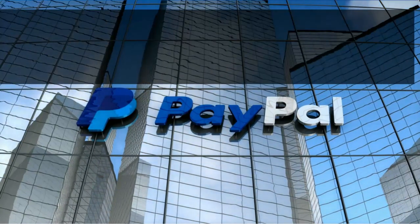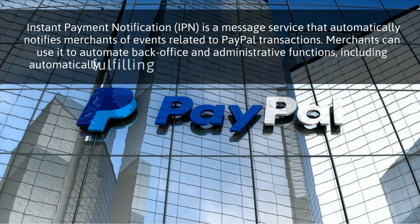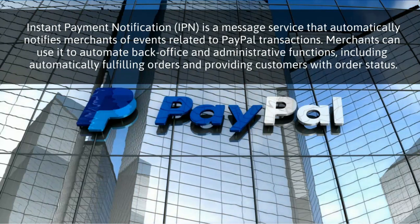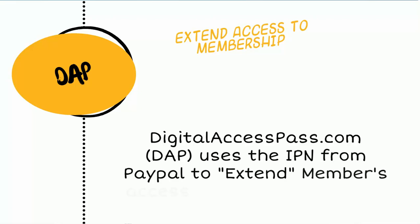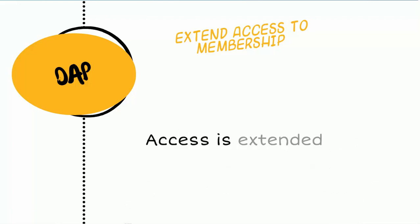IPN stands for Instant Payment Notification and PayPal uses IPN to notify third-party systems such as DAP when there is a successful recurring payment. It also uses it for several other events such as cancellation, refund, payment getting suspended, and all of that. And membership plugins such as DAP use the IPN to extend users' access to the membership product.